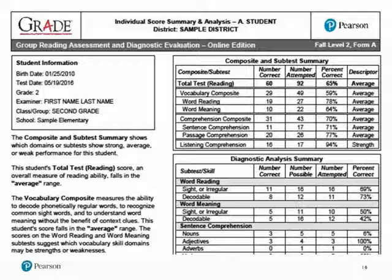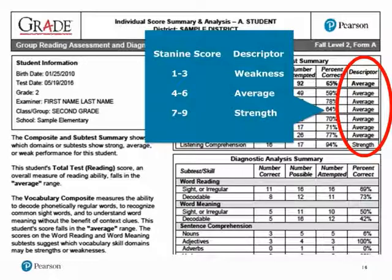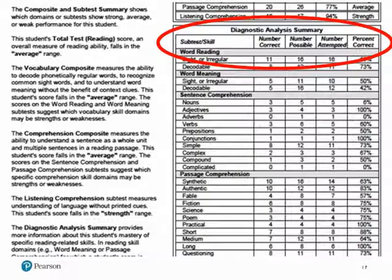The composite and subtest summary shows which domains or subtests show strong, average, or weak performance for a student. These performance descriptors are based on stanine scores of 1 through 9. A score of 1 through 3 translates into a descriptor of weakness; students receiving an average descriptor fall between a score of 4 and 6, and strength represents a stanine score between 7 and 9. In this example, the student's total test score and overall measure of reading ability falls in the average range. The diagnostic analysis summary provides more information about the student's mastery of specific reading-related skills. In a reading skill domain such as word meaning, for which a student's score is below average, the percent correct shown in the diagnostic analysis may help identify which specific skills may require further instruction to help improve overall reading ability.